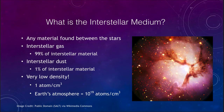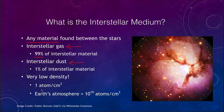The interstellar medium is any material that is found between the stars — it doesn't matter what it is. It is broken down into two components: there is the interstellar gas, which is 99% of the interstellar material, and there is interstellar dust, which is slightly larger particles making up the remaining 1% of interstellar material.